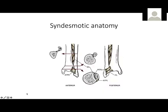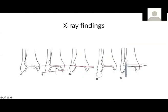In terms of syndesmotic anatomy, we know the ligaments: the anterior ligaments, posterior ligaments, the interosseous ligament, and the anterior transverse ligaments. In terms of ankle X-ray assessment, we look at the medial clear space, the talocrural angle, the talar tilt, the dime sign, and the tibiofibular clear space and overlap. For syndesmotic assessment, the medial clear space and the tibiofibular clear space are the most critical findings.